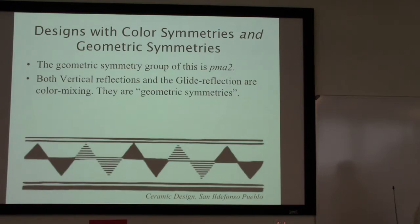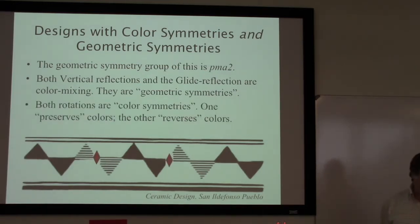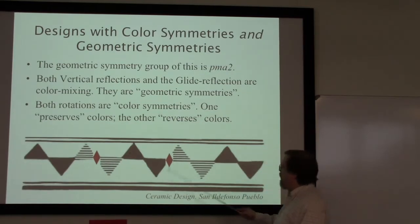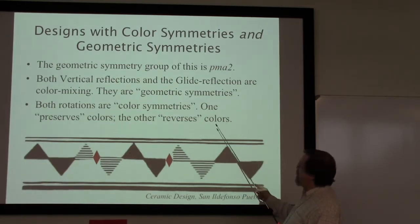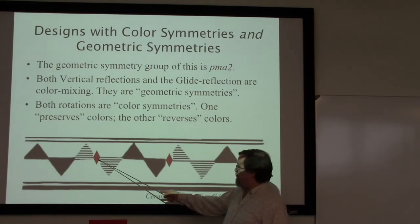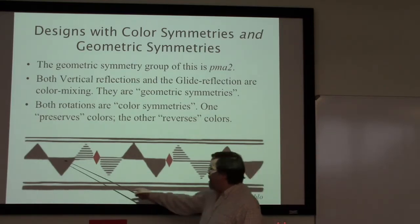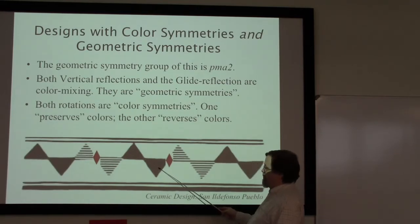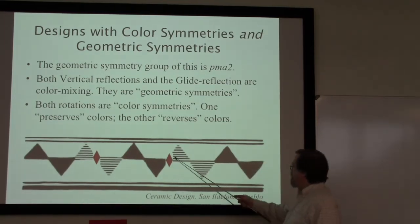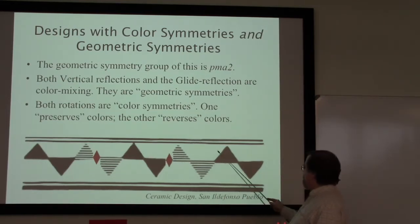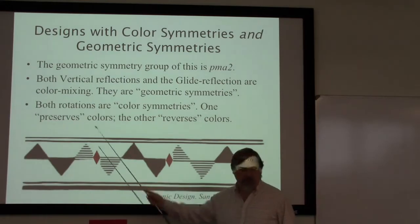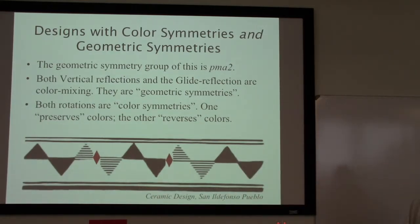Those are color mixing but they do count as geometric symmetries. However, the rotations in here are real honest color symmetries. This one is color preserving — striped goes to striped and this pair of black triangles goes to this pair of black triangles. This other rotation is color reversing — black goes to striped, and both of these blacks go over to the striped. So one rotation is preserving and the other is reversing.